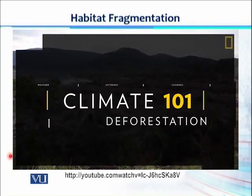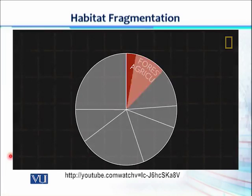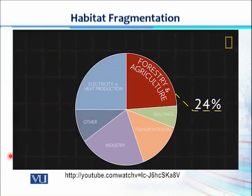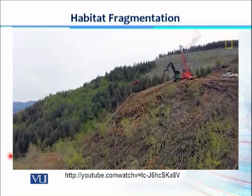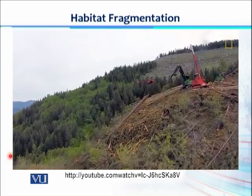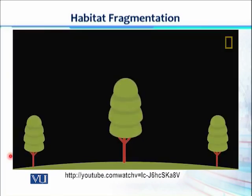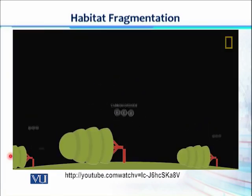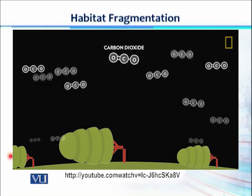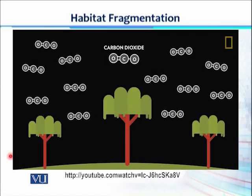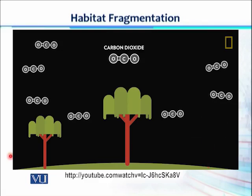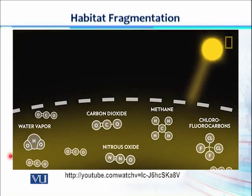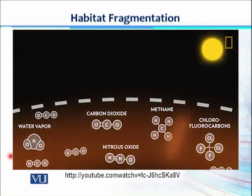Why should we care about deforestation? Together, forestry and agriculture are responsible for 24% of greenhouse gas emissions, making deforestation a significant contributor to climate change. Deforestation impacts greenhouse gases in two ways: first, when trees are felled, they release the carbon they are storing into the atmosphere; second, trees play a critical role in absorbing the greenhouse gases that fuel global warming. Fewer forests mean larger amounts of greenhouse gases entering the atmosphere and increased speed and severity of global warming.